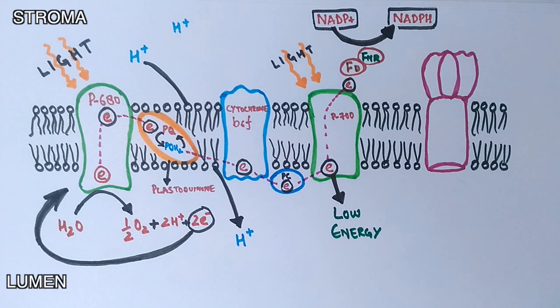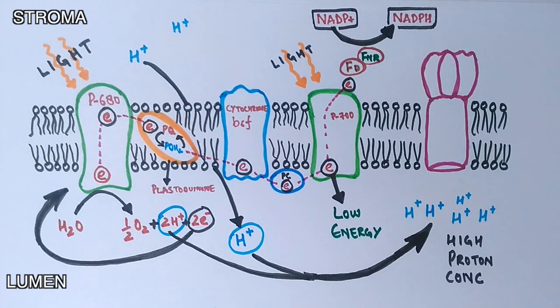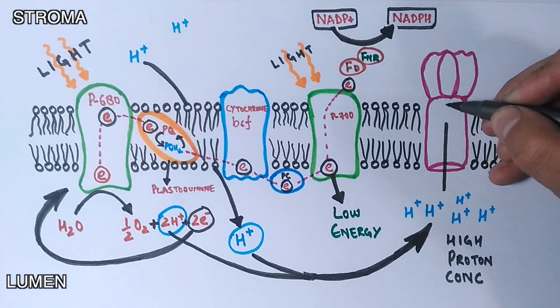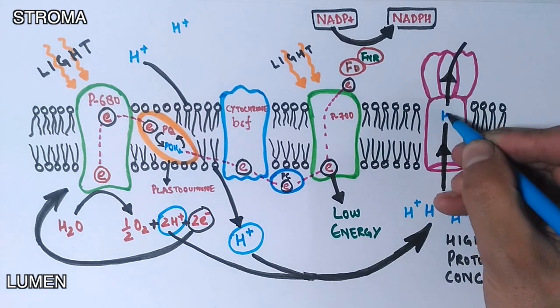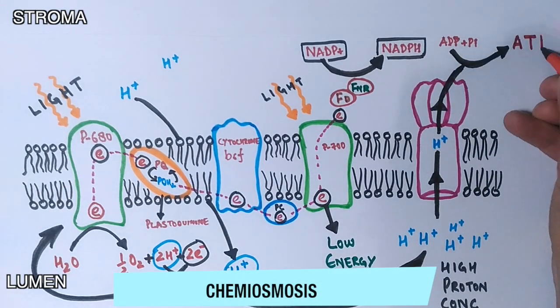For the generation of ATP, we see we have created a high concentration of protons in the lumen side of the thylakoid. This creates an electrochemical gradient, and by this the protons move down their electrochemical gradient—that means from lumen towards the stroma. This movement of protons is mediated via ATP synthase, a channel protein which uses proton motive force to generate ATP from ADP through the process of chemiosmosis.